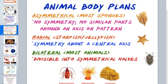Asymmetrical means there is no symmetry. Symmetry refers to a similar pattern around an axis. Most sponges have random growth areas with no symmetry, no pattern, and no left and right side — there's no central axis to find a similarity. Some sponges do have radial symmetry, but primarily sponges are asymmetrical.